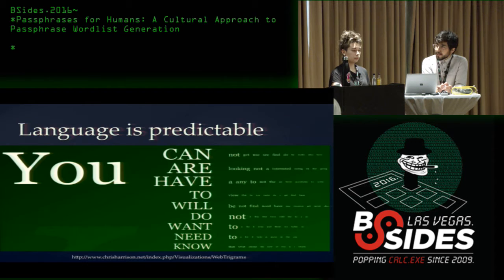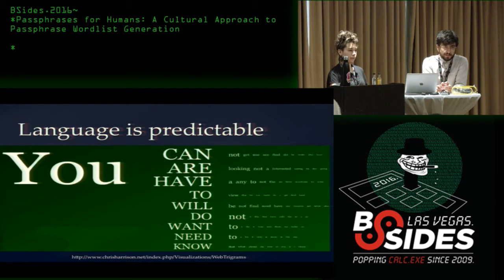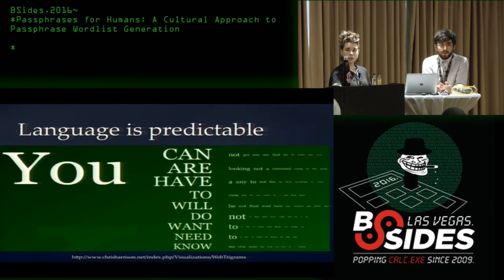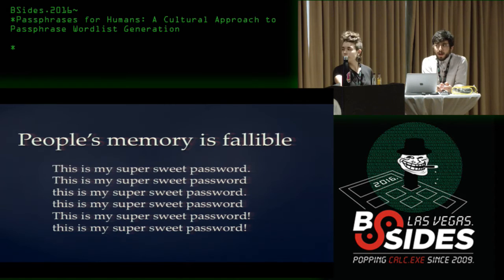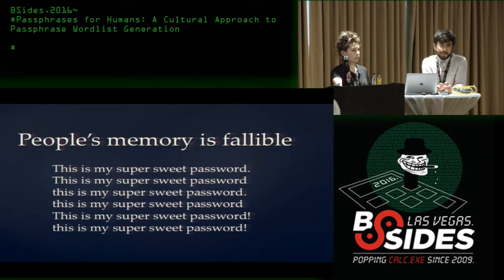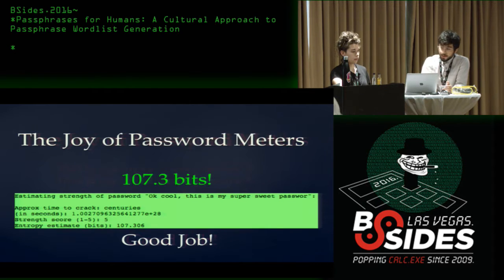Language is pretty predictable. We like to think we can create random statements, but language follows patterns and machines are really good at identifying this. Google's ngram data shows that if you enter the word 'you,' the words most likely to follow are 'can,' 'are' — narrowing down the possible options a machine needs to search. Another issue is that when users pick their own passphrase, their memory is fallible. Close to half of our forgotten passphrase support tickets were resolved by asking: 'Did you capitalize the first letter? Did you add a period at the end?'